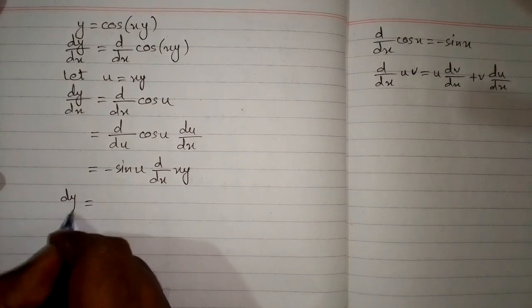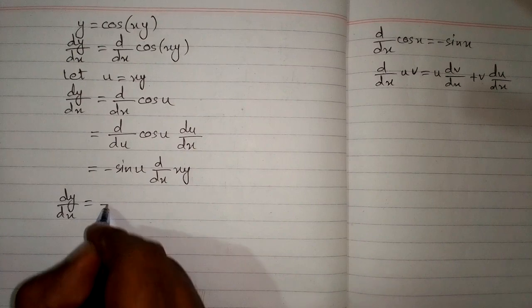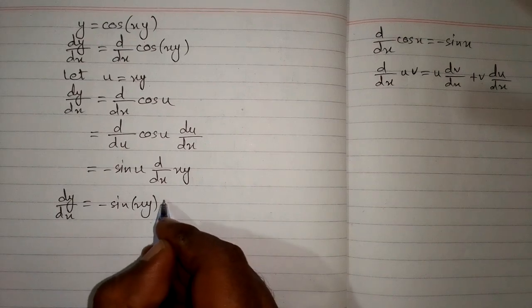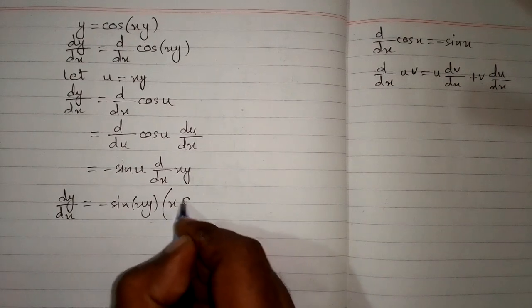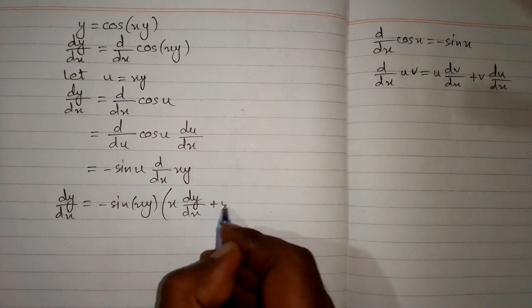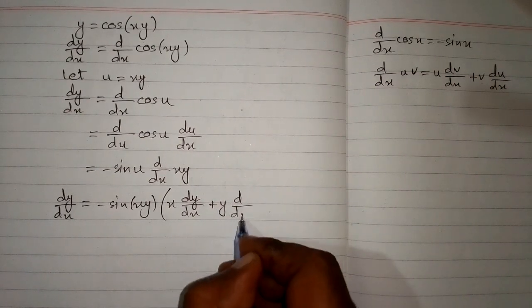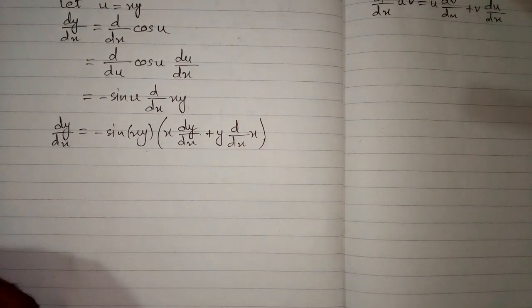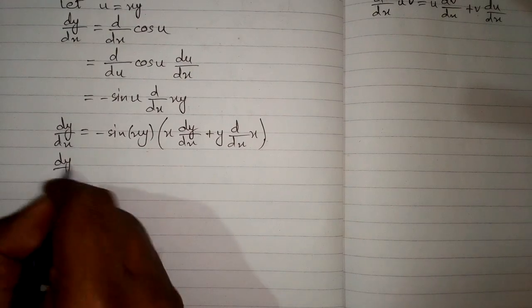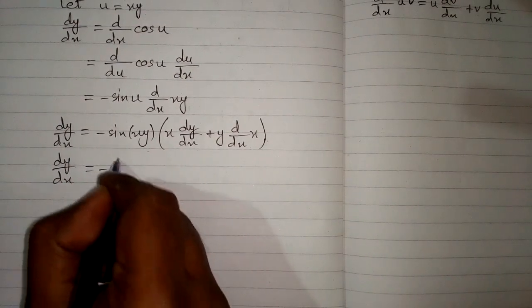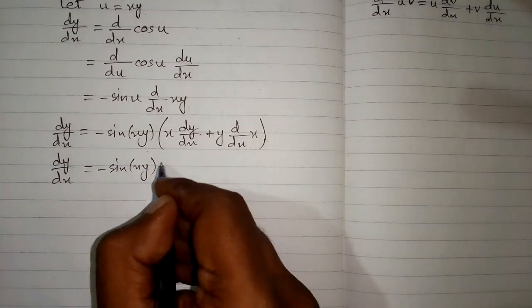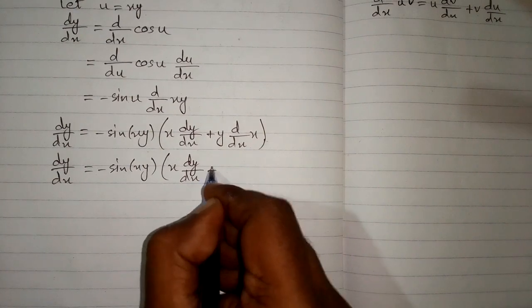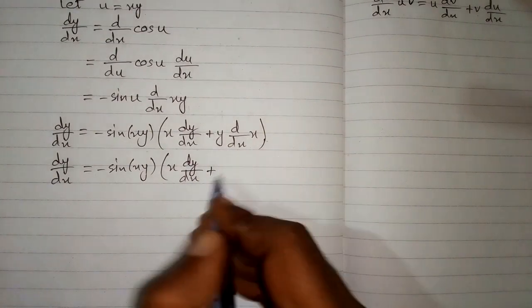We will put u and v in their respective places in this formula. So we have dy/dx = minus sine of xy, and here we apply the product rule: x times the derivative of y plus y times the derivative of x. We then have dy/dx = minus sine of xy multiplied by x times dy/dx plus 1 times y, which is y.